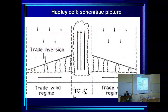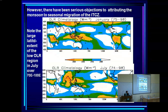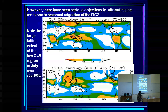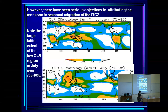We have the Hadley cell and the trough, but there were serious objections to calling the system the ITCZ in the context of monsoon rainfall. These objections were raised firstly by Murakami, who said: just look at the OLR climatology.